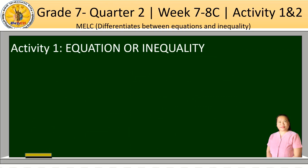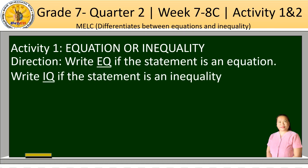Let's have Activity 1, entitled 'Equation or Inequality.' Direction: write E if the statement is an equation. For example, number 1, we have 2x is equal to 7 plus 3. Here we have the equal sign, so this statement is an equation. You're going to write E only.